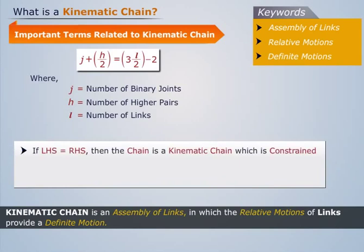If the value at the left-hand side is equal to the value at the right-hand side, then the chain is a kinematic chain which is constrained.